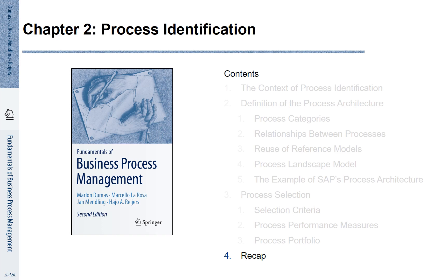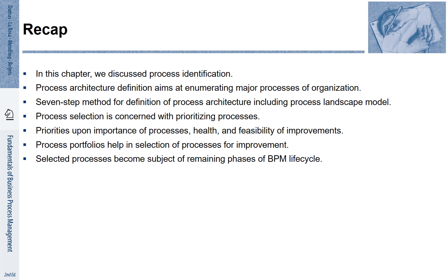We summarize Chapter 2. In this chapter, we discussed process identification. We have seen that process architecture is used to define the various processes of a company. We presented a 7-step method for defining the process architecture. Once we have the process architecture, we need to select suitable processes for improvement. We use three criteria to prioritize: the strategic importance of the process, its health, and the feasibility of a potential improvement.